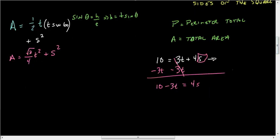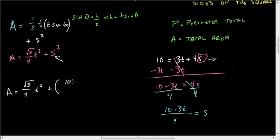Now I'm going to divide both sides by 4. So the 4s go away on the right, and I'm left with 10 minus 3T over 4 on the left. That equals S. So now that I have that, I can take that value and plug it back in. So now I have A equals square root of 3 over 4 T squared plus 10 minus 3T over 4, all that squared.